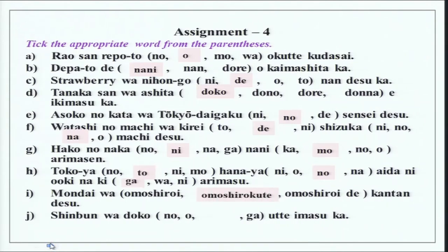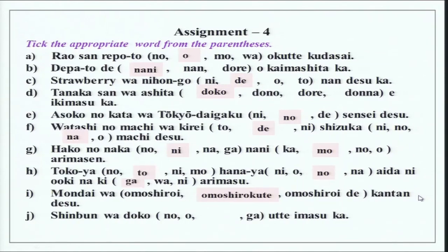Mondai wa omoshirokute kantan desu — again we are joining two adjectives, an i-adjective and a na-adjective. To join an i-adjective, remove the i and add kute for 'and' — omoshiroi becomes omoshirokute, meaning interesting and easy. If you put na with mondai, it becomes mondai wa omoshirokute kantan na mondai desu; since mondai is not repeated here, we do not put it again. Shimbun wa doko de utte imasu ka? — place de utte imasu ka? I hope your particles are clear now.